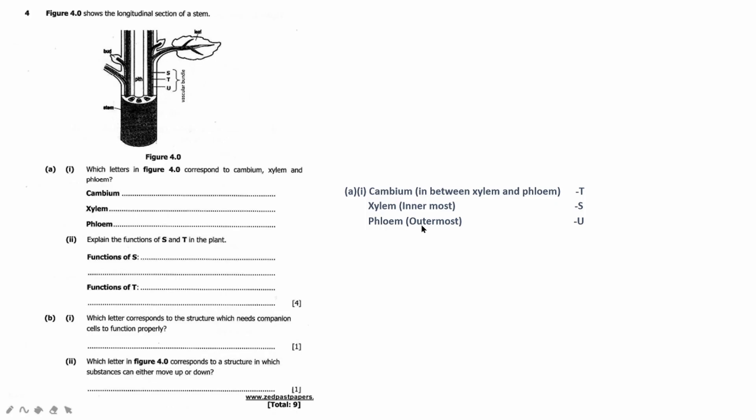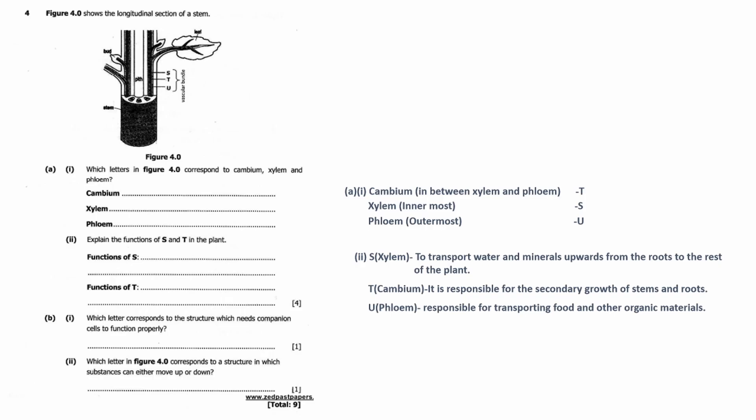Explain the functions of S and T in a plant. So S, which is xylem, the function of the xylem is to transport water and minerals upwards from roots to the rest of the plant. And the function of T, which is the cambium, it is responsible for the secondary growth of stems and roots. So I've also added the function of phloem for revision purposes. So phloem is responsible for transporting food and other organic materials throughout the plant.